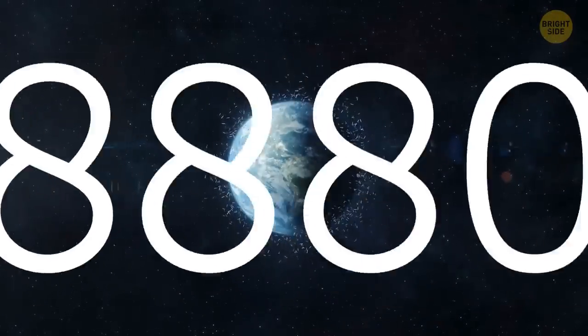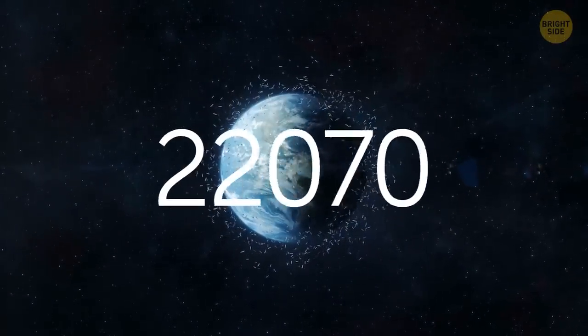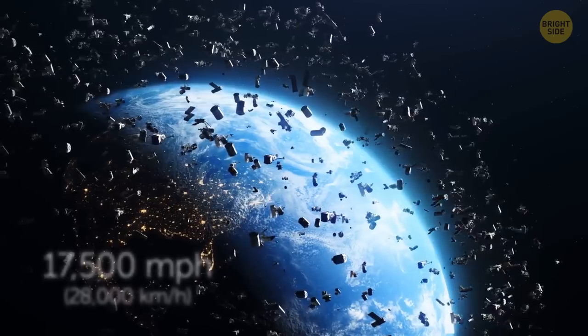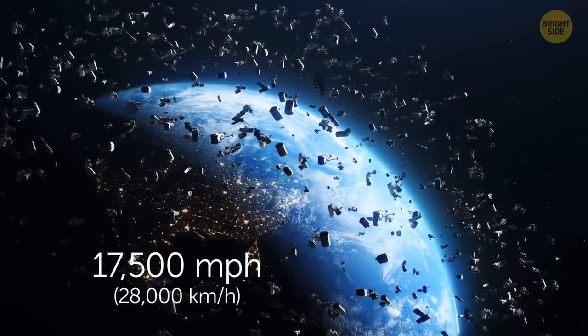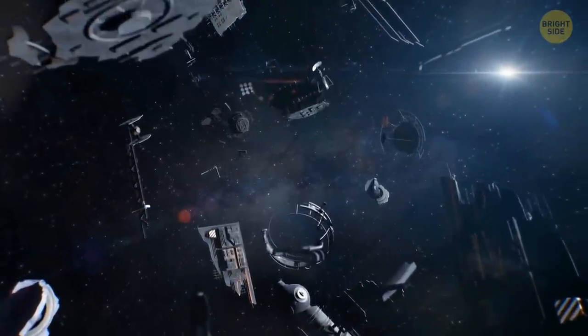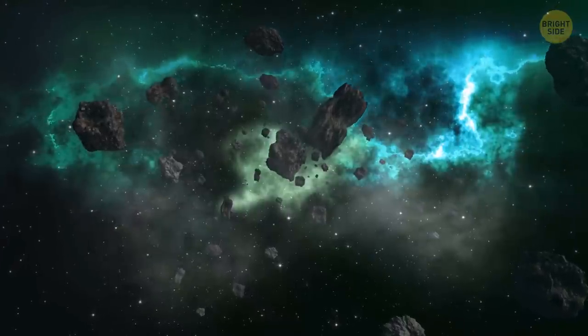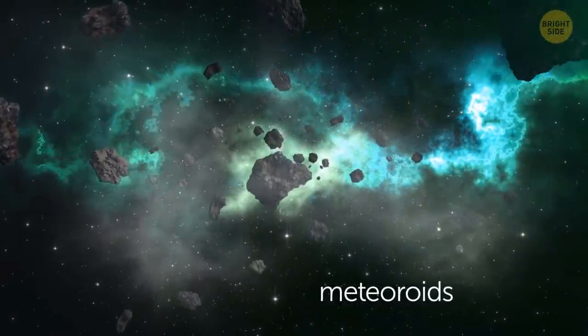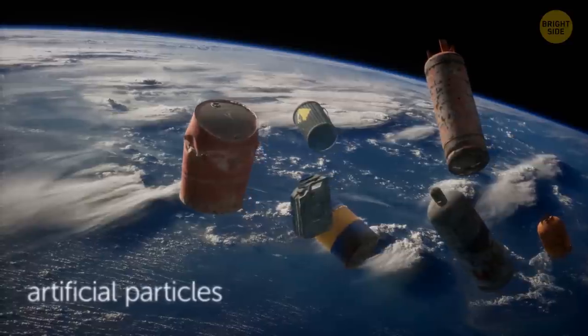There are more than 23,000 pieces of so-called space junk, bigger than a softball, floating above our planet at speeds up to 17,500 miles per hour. And there are 500,000 pieces in general, some of them the size of a marble. Space waste is generally debris made up of natural particles called meteoroids and artificial particles, like things we make on the Earth.